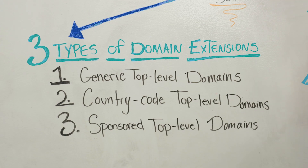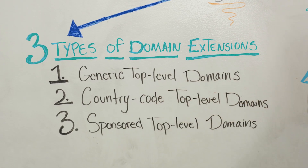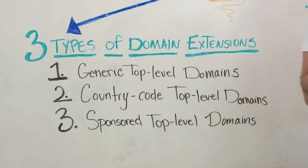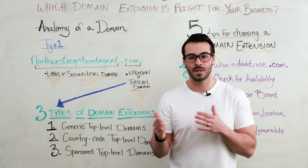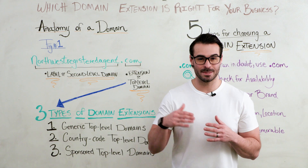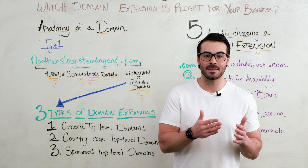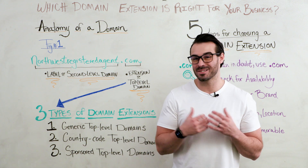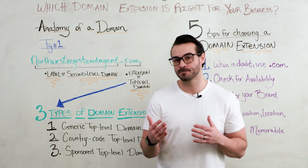The next type is country code top level domains. These are extensions that are specific to certain countries or locations. They're great for targeting locals in that specific region, and you do not need to be in that area to use them. An example would be .uk for the United Kingdom.